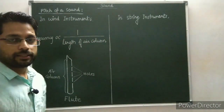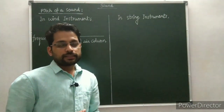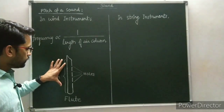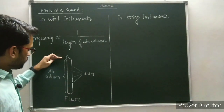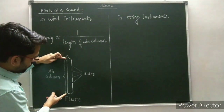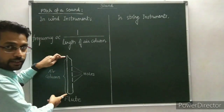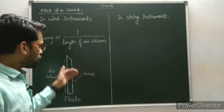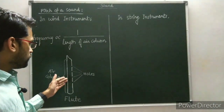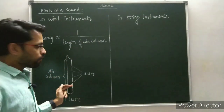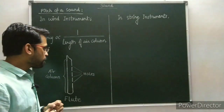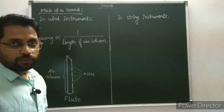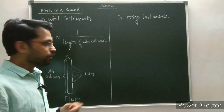The first type is wind instruments. In wind type instruments like flute, there is an air column. Here is the diagram of a flute — along the length of the flute there is an air column. Wind instruments are provided with a number of holes, and we can change the length of the air column by closing these holes using fingers.